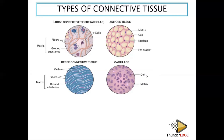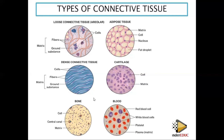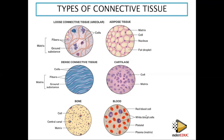Cartilage is found in the ear, and bone is another connective tissue — when it grows, you can see the cells arranged in circles. Blood is also a connective tissue, containing white blood cells, red blood cells, platelets, and plasma, which is a fluid. These are the connective tissues that connect different parts of the body.